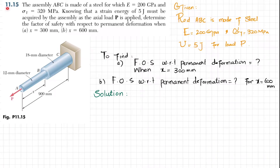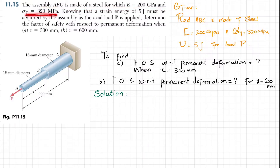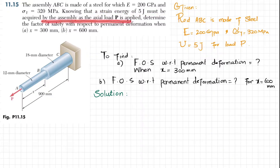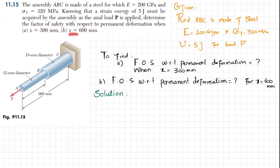Welcome back. Problem 11.15. The statement is: the assembly ABC is made up of steel for which E is 200 gigapascals and yield stress is equal to 320 megapascals. Knowing that a strain energy of 5 joules must be acquired for the assembly as axial load P is applied, determine the factor of safety with respect to permanent deformation when x is equal to 300 millimeter and when x is equal to 600 millimeter.